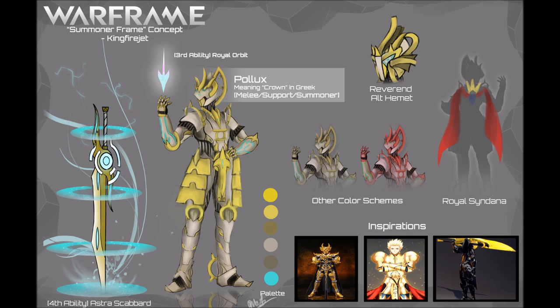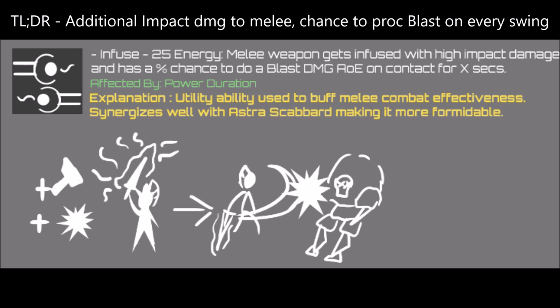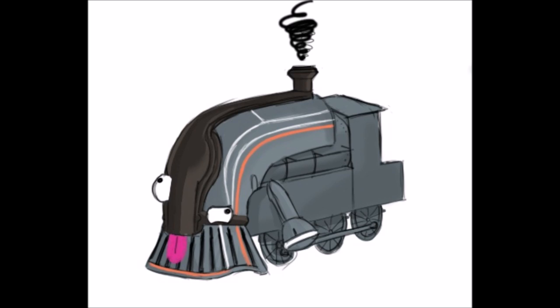Pollux's first ability is Infuse. Upon activation, Pollux's melee weapon will deal high impact damage as well as having a percent chance to create a blast AOE with every swing for a few seconds. While the additional impact damage can surely be useful against corpus enemies, it's the percent chance to make a blast AOE that really takes the cake here.